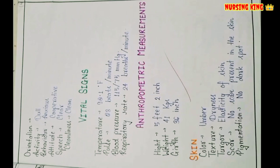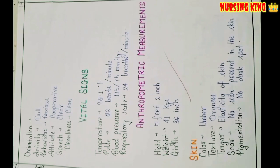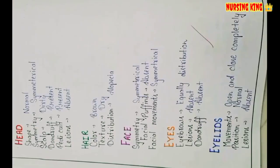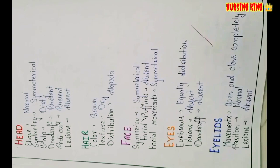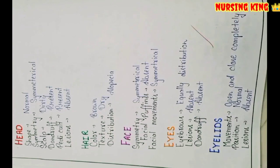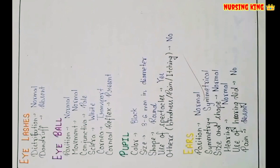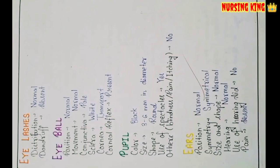In the physical examination, first examine the skin — color, texture, and skin pigmentation. Note any abnormalities in any area. Then examine the head — shape, scars, lesions, hair, and face. For the eyes, check the eyelids, iris, eyeballs, and pupils for any abnormalities.